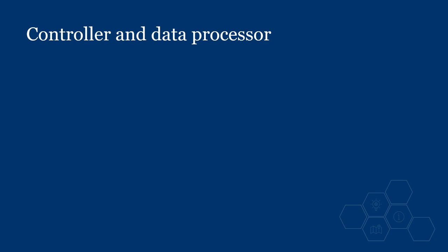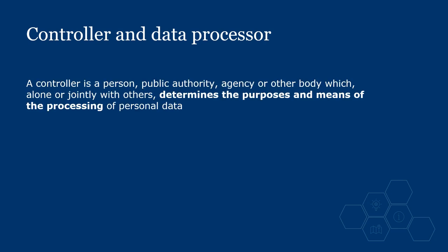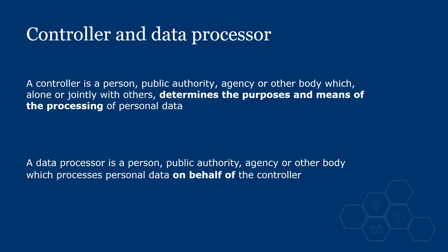And finally, two other really important definitions. A controller is a person, public authority, agency or other body which alone or jointly with others determines the purposes and means of the processing of personal data. A data processor is a person, public authority, agency or other body which processes personal data on behalf of the controller. For example, the ICO is a controller and processes our personal data. It may send out our payroll details to be processed by another company — that other company is a data processor who processes the data on behalf of the ICO. But it is the ICO as the controller who determines the purposes and means of the processing.